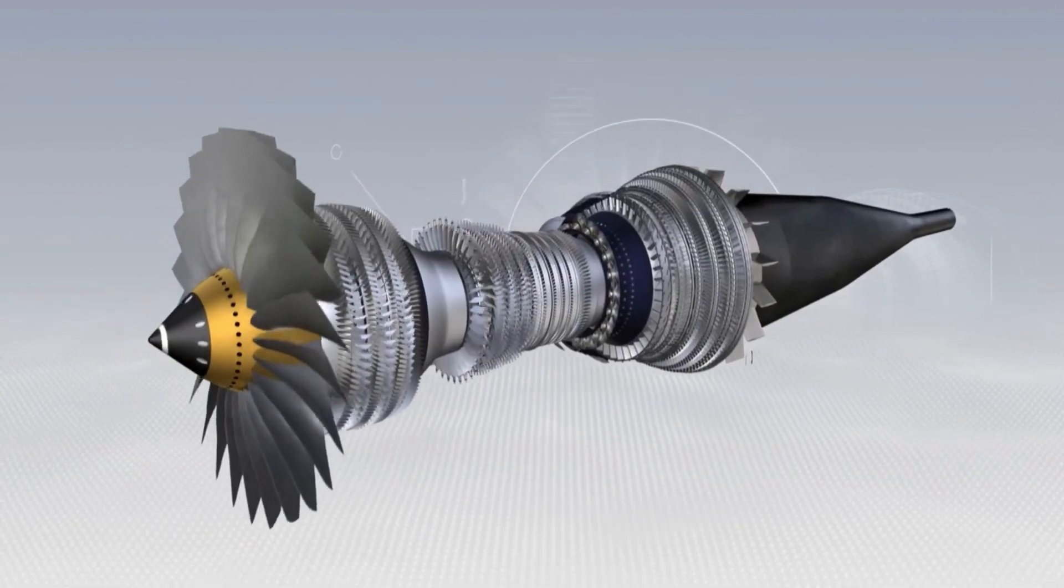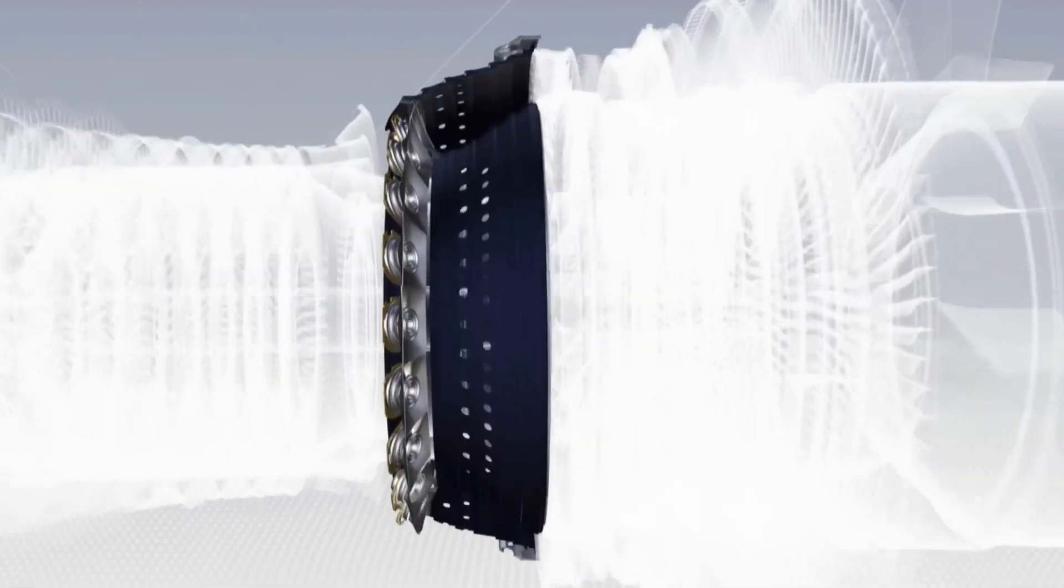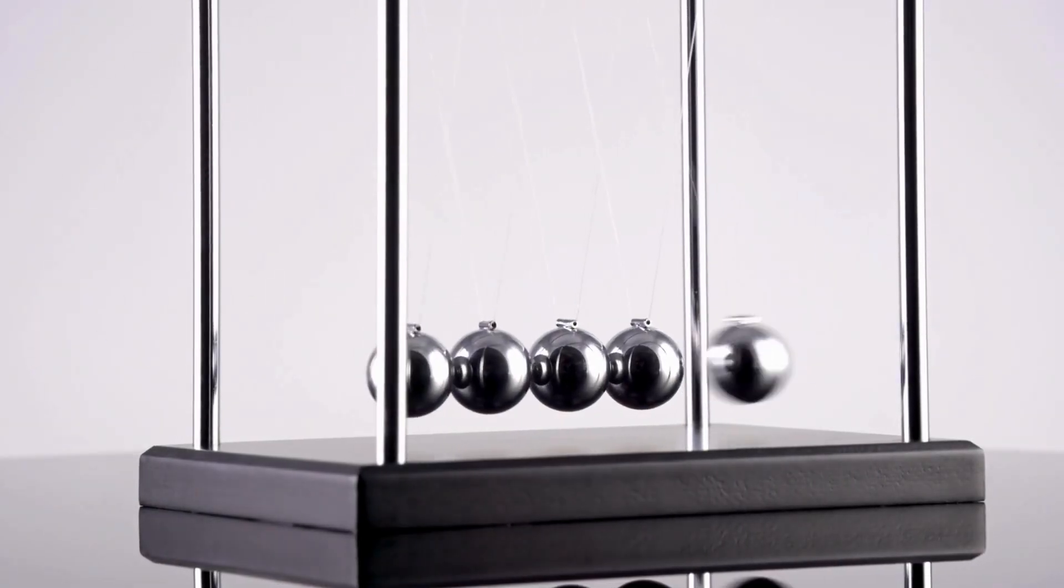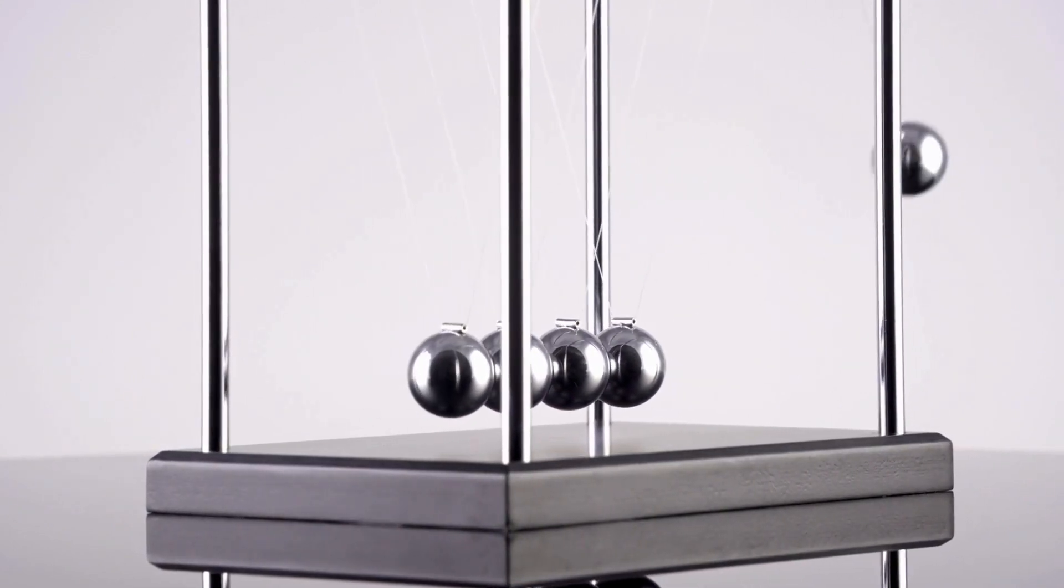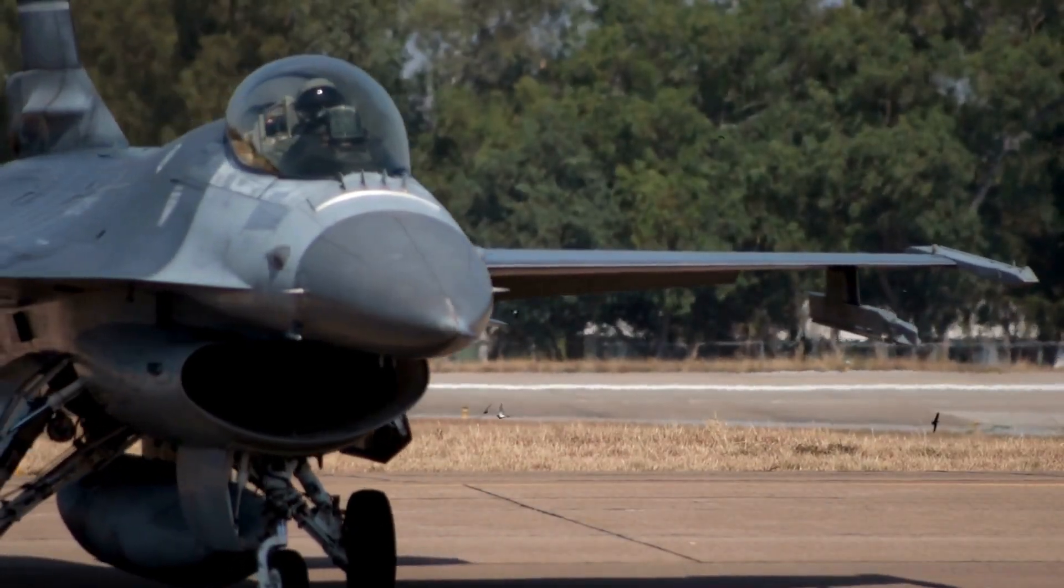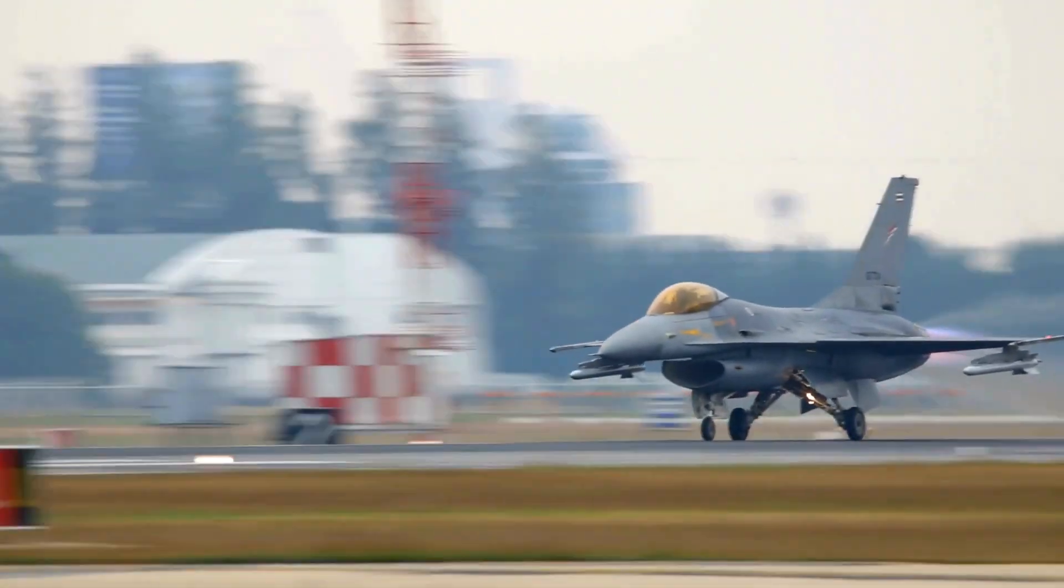A jet engine has five main parts: air intake, compressor, combustion chamber, turbine, and exhaust nozzle. It works on Newton's third law of motion - for every action there is an equal and opposite reaction. Simply put, when hot exhaust gases blast out of the engine at high speed, they create a powerful push that propels the fighter jet forward.